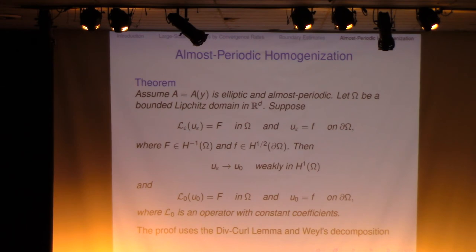So the qualitative theory for almost periodic homogenization was done a long time ago. It's late 70s and early 80s. So you still have the convergence of a boundary value problem. So A is elliptic and almost periodic. And omega is a Lipschitz domain and you solve a Dirichlet problem. And you let epsilon goes to zero, the solution will have a limit weakly in H1. And moreover, the limit is a solution of a boundary value problem for an operator with constant coefficients.